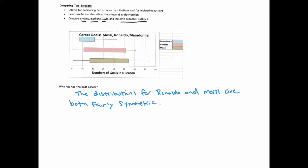So what does that mean? Well, it basically means that there's a little bit, there's some consistency in terms of the number of goals each of them has scored. If we saw a really long whisker on either end, that might suggest that we have some unusually good seasons or unusually bad seasons. But they're both pretty symmetric.